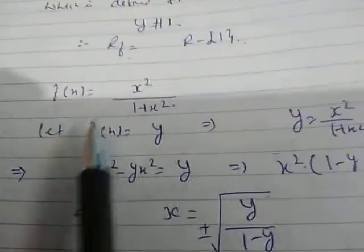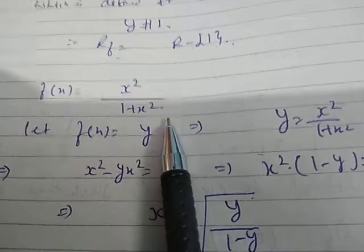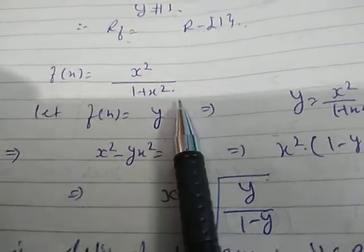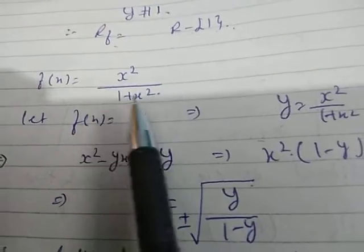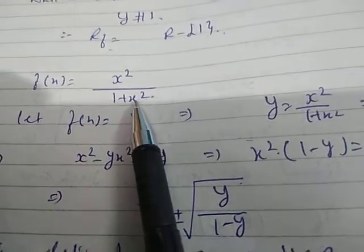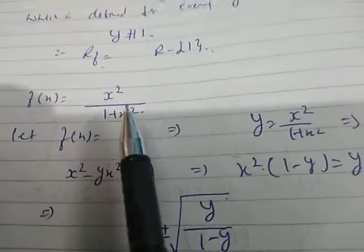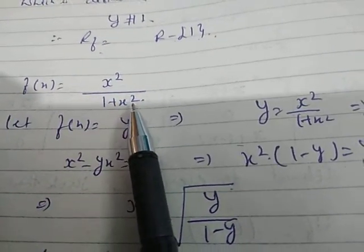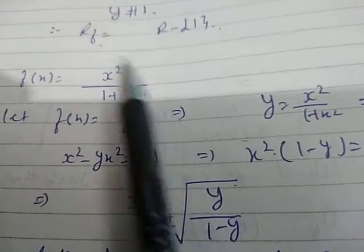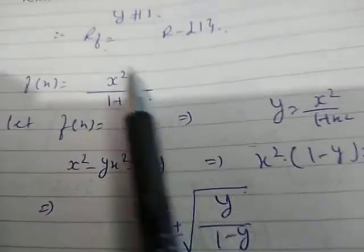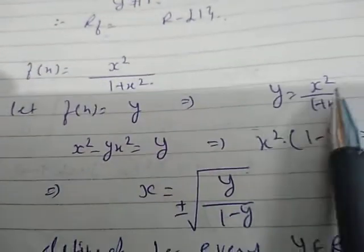Now the next part: f(x) = x²/(1+x²). For range, since there is no restriction on x — when x = 0 the denominator is 1, and when x is negative, x² is still positive — there are no restrictions on x. Therefore, the domain is all real numbers.